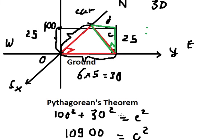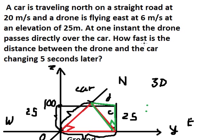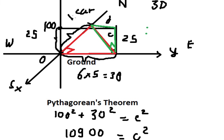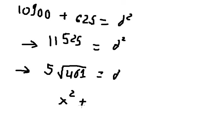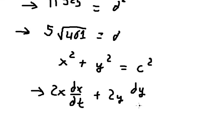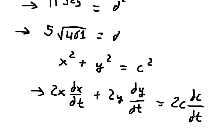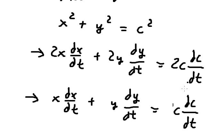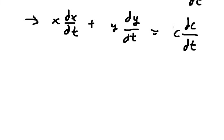We just finished calculating the distance. The question wants to find how fast — let's say this one is s for the car, and y for the road. Because x, y, and c change value, we need to first differentiate both sides. We have the formula, and we want to find dc/dt — so we divide both sides by c, and the 2s cancel.